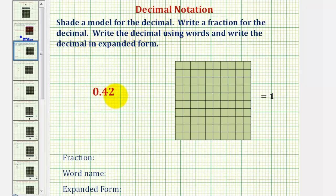We want to shape a model for the decimal 0.42 or 42 hundredths. Then write a fraction for the decimal. Write the decimal using words and write the decimal in expanded form.